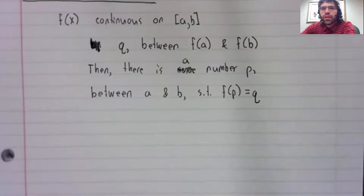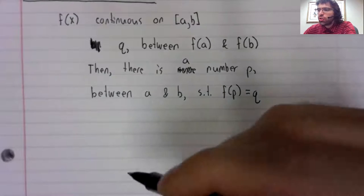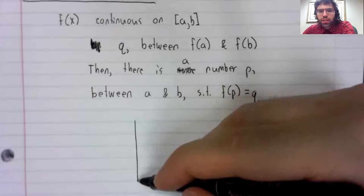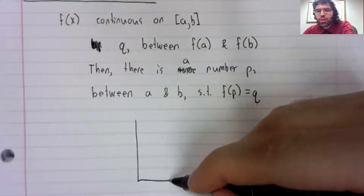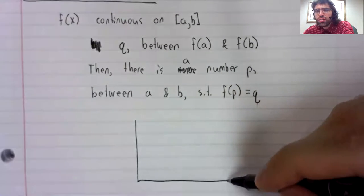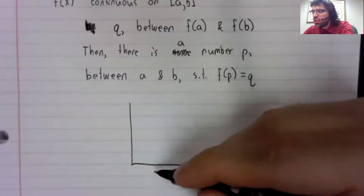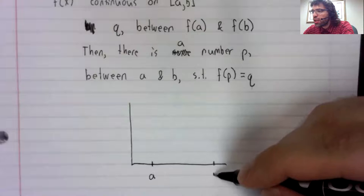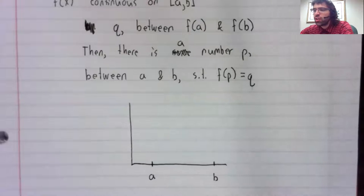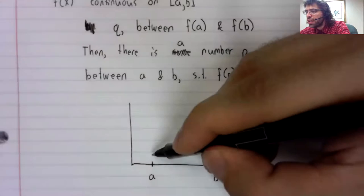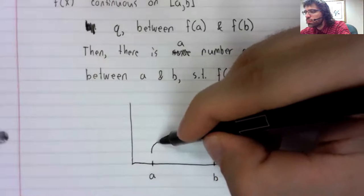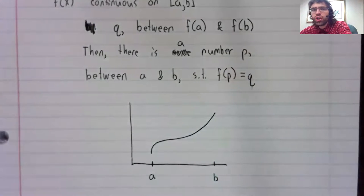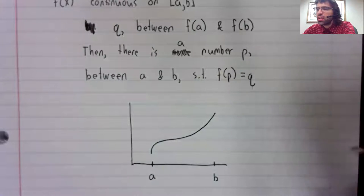That might not be easy to understand, but I think it might help if we think of this graphically. We've got a function defined on the interval from a to b, and this function is continuous.